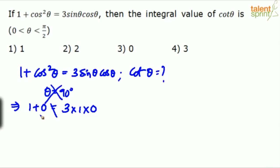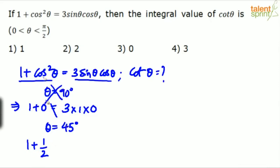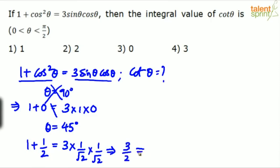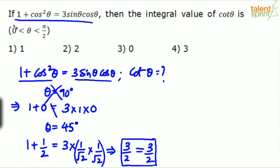Then maybe substitute theta equals 60, or maybe theta equals 45. Let's substitute theta equals 45 and see what happens. You have to be very quick while doing such substitutions; if you are slow in your calculation, this method will not help you. Cos 45 is 1 by root 2, so cos squared 45 is 1 by 2. Left-hand side: 1 plus 1 by 2 equals 3 by 2. Right-hand side: 3 into sin 45 into cos 45 equals 3 into 1 by root 2 into 1 by root 2 equals 3 by 2. This satisfies! Taking theta as 45 has satisfied the given equation, so we can conclude that theta is 45.